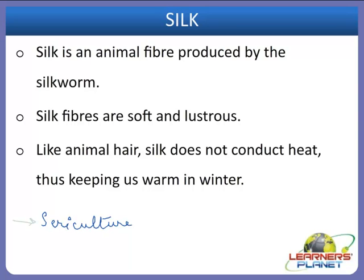A Chinese legend says that it was the wife of the mythological Yellow Emperor, called Huangdi, who taught the Chinese people the art of silk throughout history. The empress was ceremonially associated with sericulture, and in this way the rearing of silkworms for obtaining silk came into existence. So basically, silk is an animal fiber that is very soft and lustrous. Its main property is that it does not conduct heat, and sericulture began with the Chinese people.